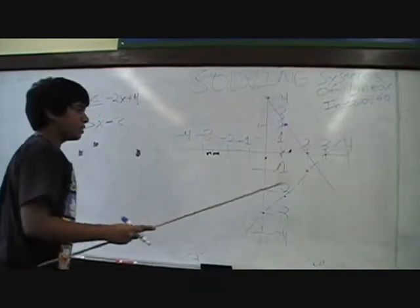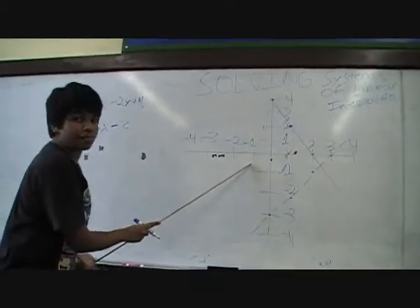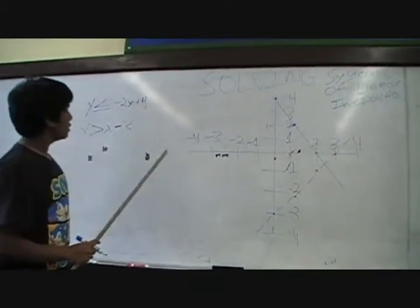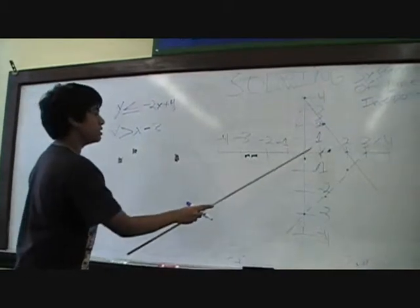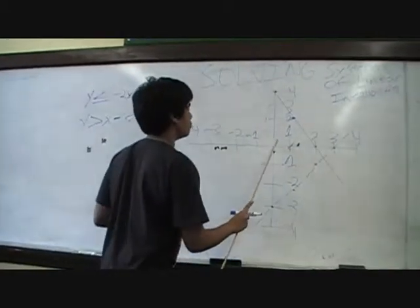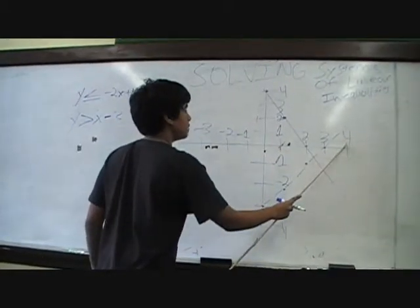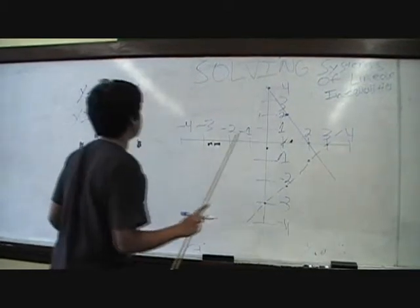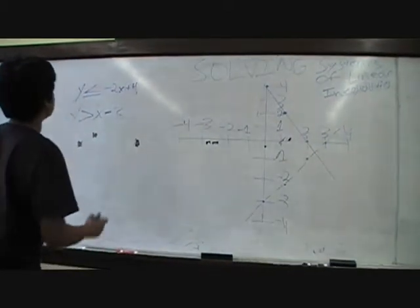Next thing you want to do is, you notice, the graph is blank. You've got to find out where the solution to the graph is basically. To do that, you want to use test points, such as, I don't know, 0, 0, negative 4, 0, or 1 of it does. Let's start off with 4, 0.